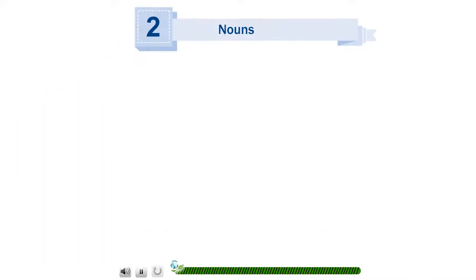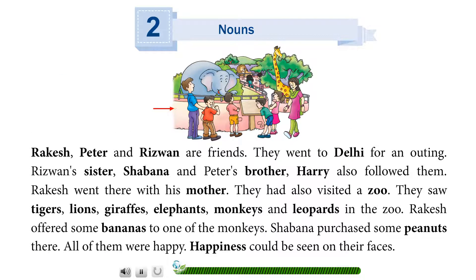Chapter 2: Nouns. Rakesh, Peter and Rizwan are friends. They went to Delhi for an outing. Rizwan's sister Shabana and Peter's brother Harry also followed them. Rakesh went there with his mother.